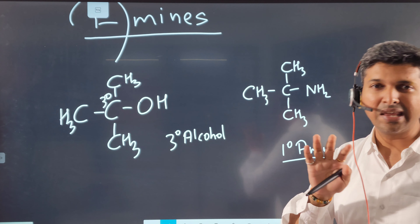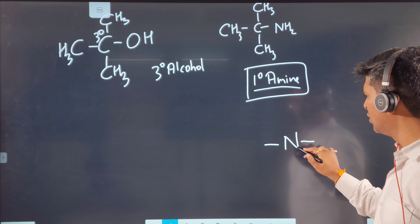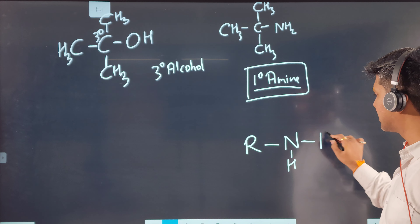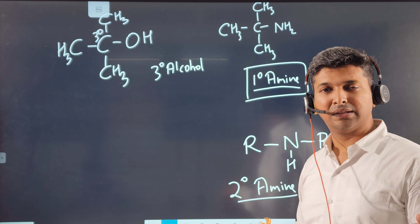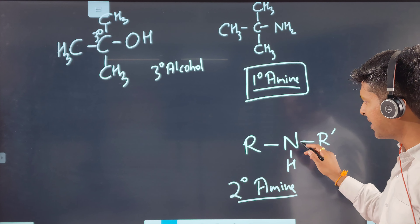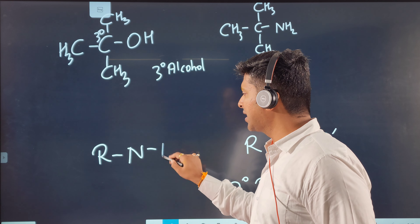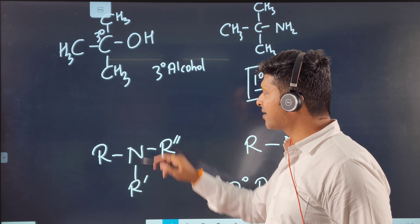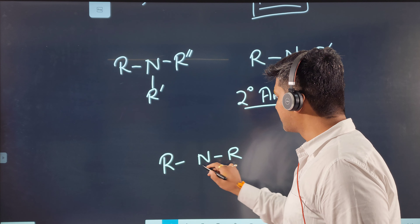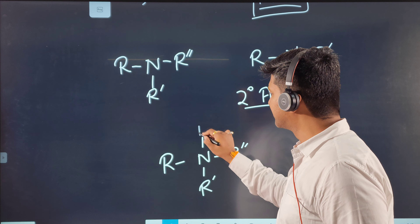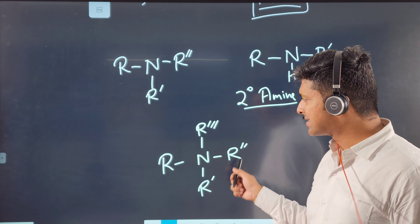If nitrogen is attached to only one carbon directly, it is a primary amine. If the same nitrogen is attached to two carbons, it is a secondary amine. It depends on how many carbons are directly attached to the nitrogen. Following this logic, we also get a tertiary amine and a quaternary amine, since nitrogen has a lone pair and can form four bonds.